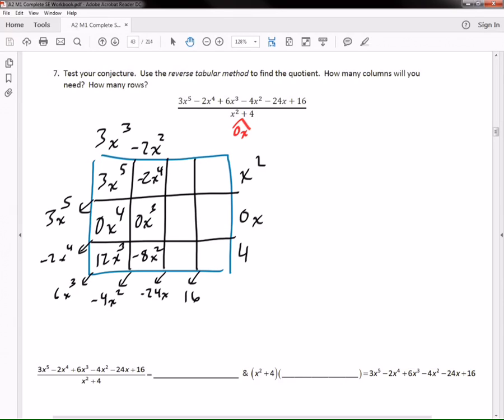I'm just going column by column. It looks like I can find this missing box right there because all of these are supposed to add up to 6x to the 3rd. So 12x to the 3rd plus 0, so that one doesn't matter, plus what would give me 6x to the 3rd? Negative 6x. Yeah, negative 6x. So I'm going to put negative 6x to the 3rd right there.